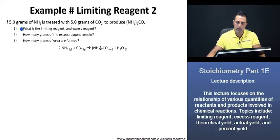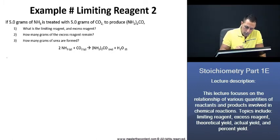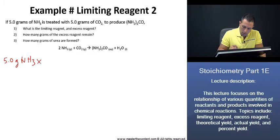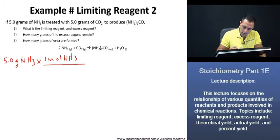To solve this problem, we'll begin with number 1. To find the limiting reagent and excess reagent, we can begin by taking the masses of the ammonia and the carbon dioxide and converting them into their moles, using their molar masses to find the amount of moles participating in our reaction. Let's begin with ammonia. If we have 5 grams of ammonia, the molar mass for ammonia is 14 for nitrogen and 3 for hydrogen, giving us 17 grams per mole.